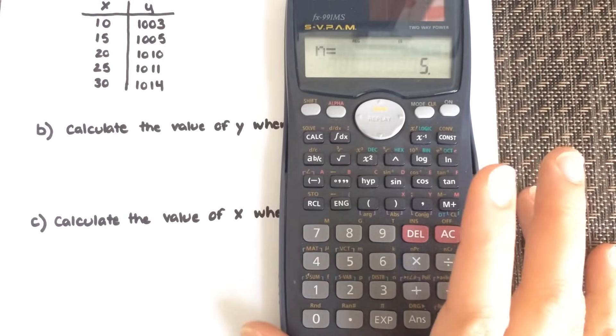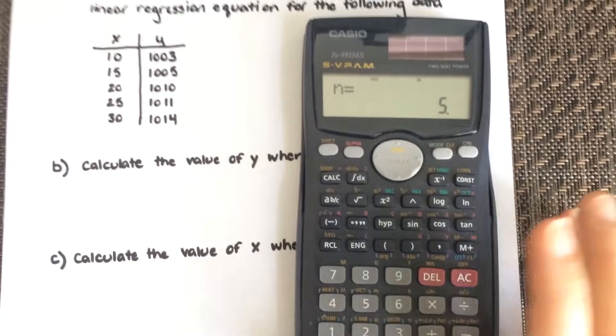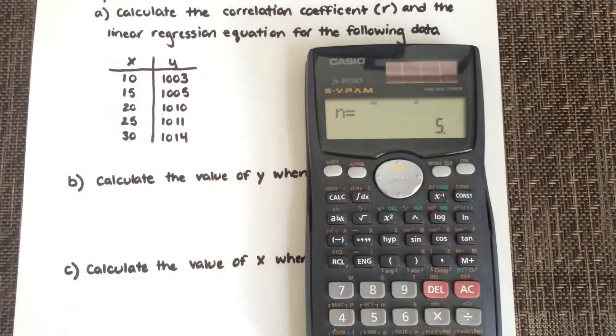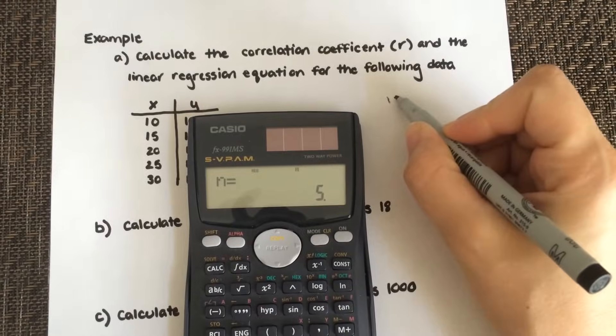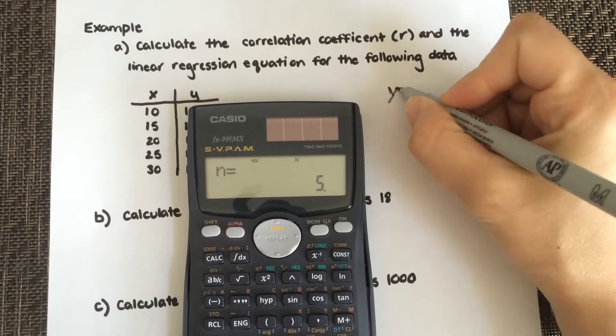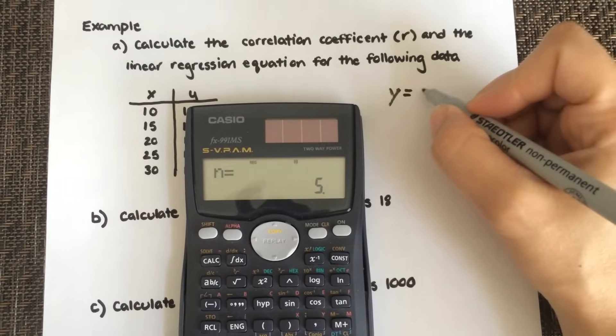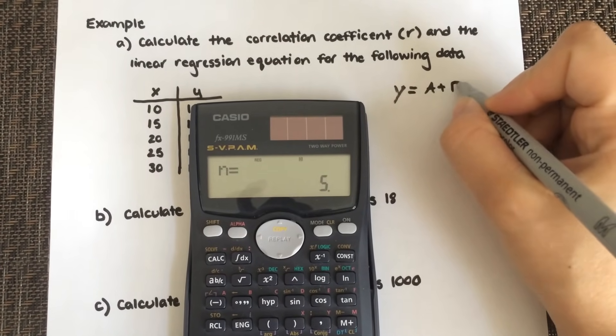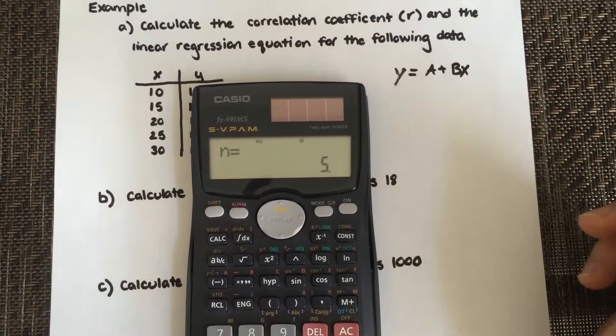Now I'm going to actually want to get the equation and my correlation coefficient. So it's important to note that the equation that they're going to give you is y equals a plus bx. So the b value is your slope and the a would be your y intercept.